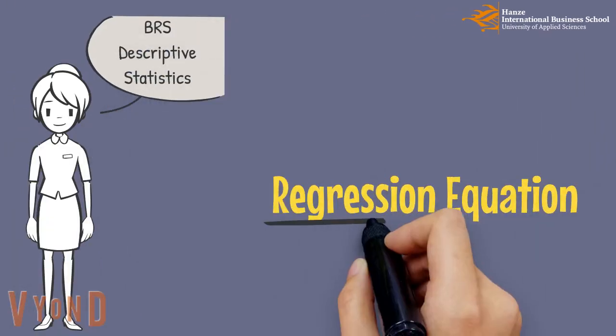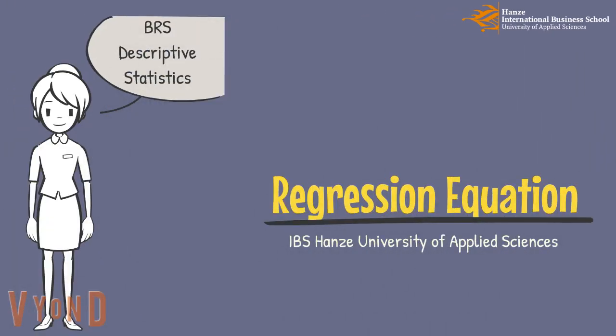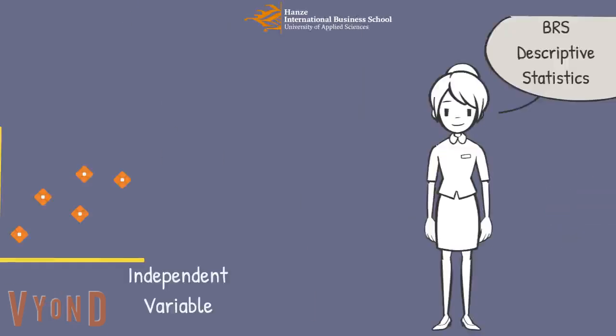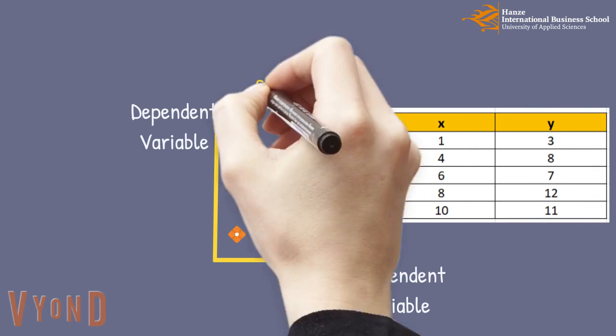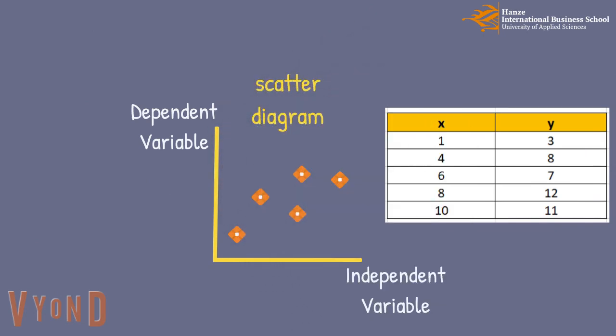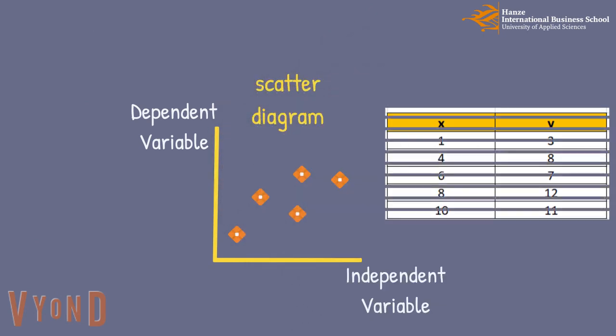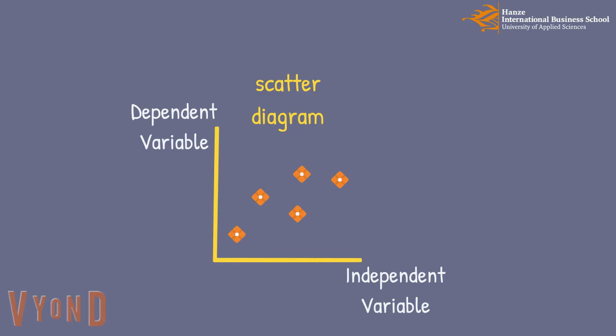Let's look at the regression equation, which is also called the least-square method. From the scatter diagram, we can see the relationship between the independent and the dependent variables.